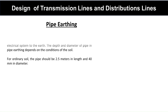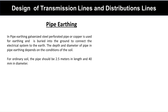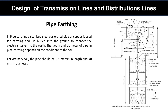Pipe earthing: In pipe earthing, a galvanized steel perforated pipe or copper pipe is used and is buried into the ground to connect the earthing system to the earth. The depth and diameter of the pipe depends on the condition of the soil. For ordinary soil and general purpose use, the pipe should be 2.5 meters in length and 40 mm in diameter. This is the diagram of pipe earthing.